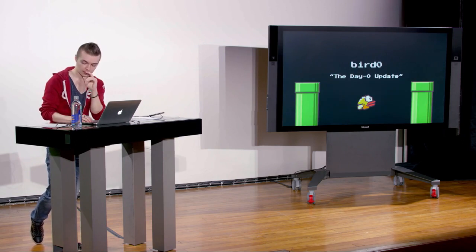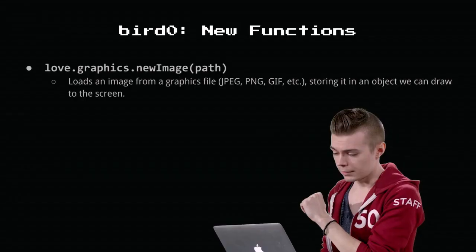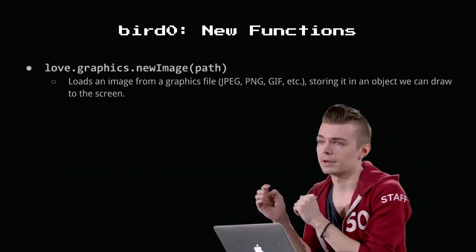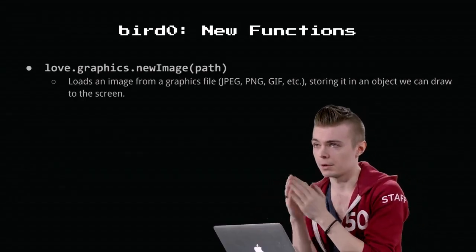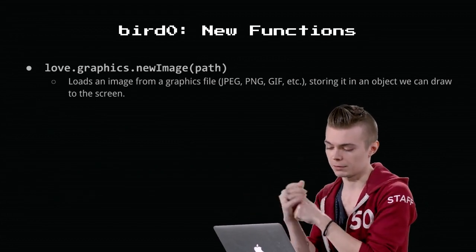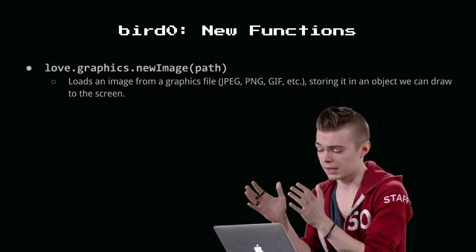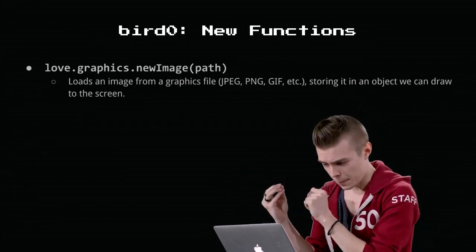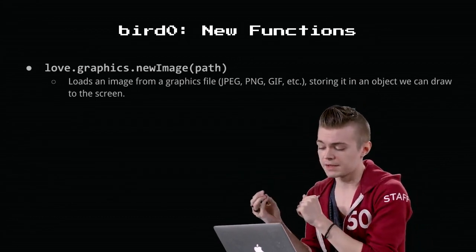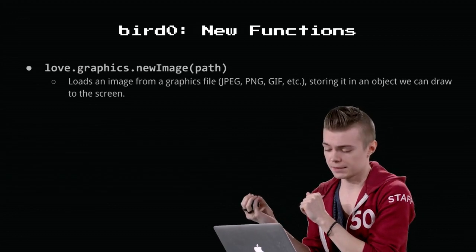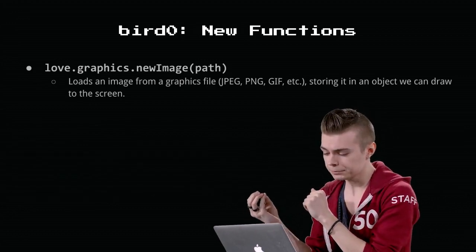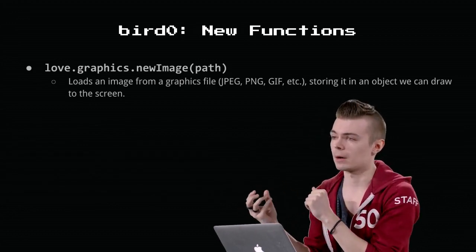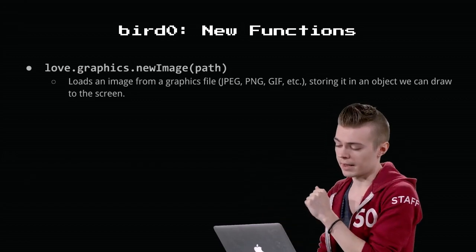Today we'll be doing a little more live coding. The very first example is the day-zero update for Flappy Bird. An important function — probably the most visibly obvious one we'll use throughout this lecture — is love.graphics.newImage, which takes a path. All it does is load an image file from your disk, specified as a string. You can then use it as an object and draw it anywhere at an x, y coordinate.